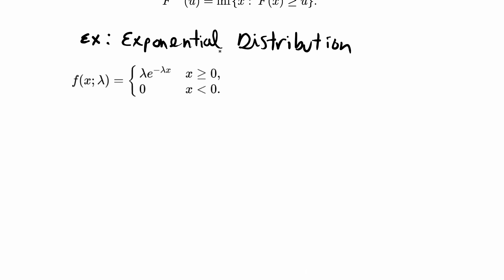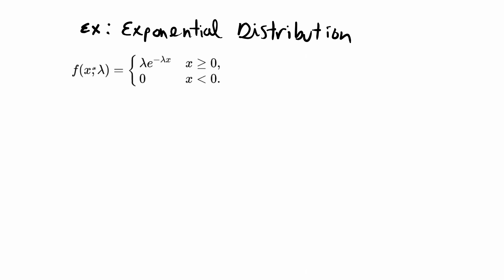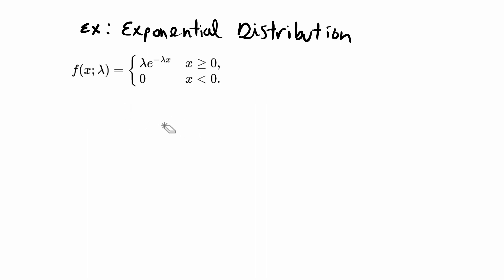I'm going to go ahead and get started with this example. For this example, I basically want to use the inverse transform method to create a random variable x that has this PDF distribution. This is going to be the exponential distribution. I want to be able to generate a random variable x that's distributed exponential with the parameter lambda. This is the PDF for this distribution. Let's go over how we do that using the inverse transform method. First, this is the PDF of the exponential distribution.